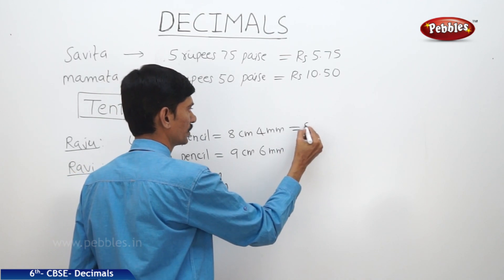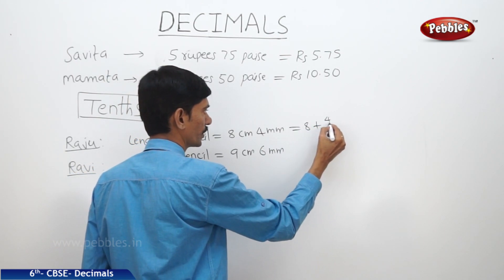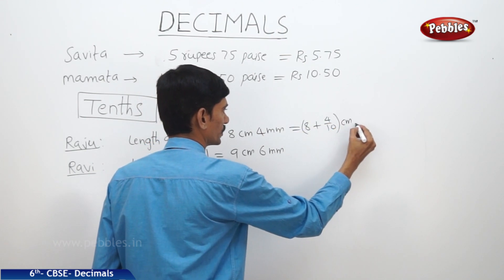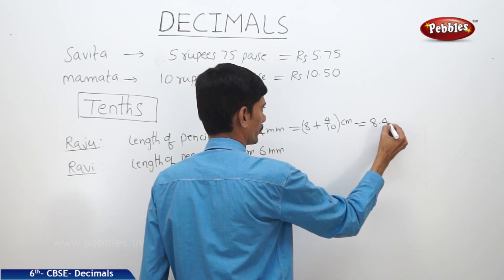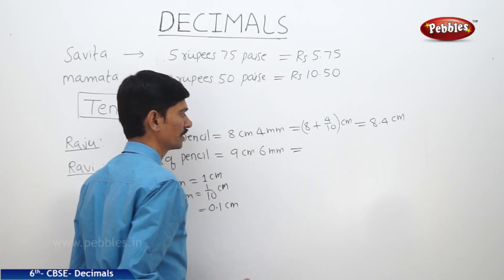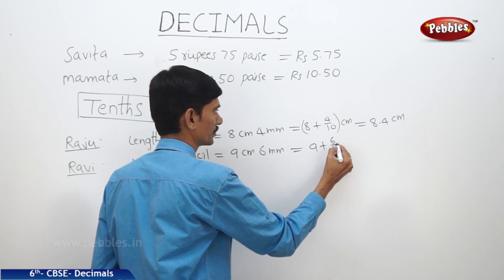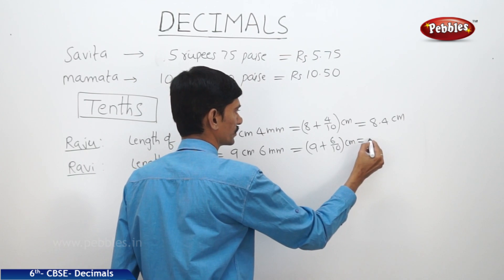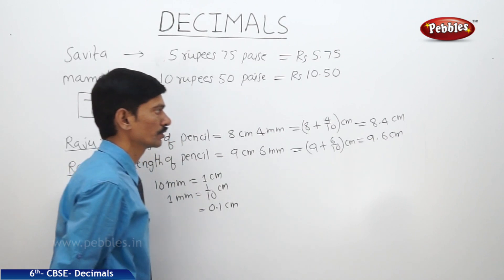Eight centimeters four millimeters can be written as eight plus four by ten centimeters, which equals eight point four centimeters. Similarly, nine centimeters six millimeters can be written as nine plus six by ten centimeters, which equals nine point six centimeters.